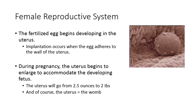To summarize what you need to know for the urogenital system: know all the different organs, know the pathway of the male reproductive system, know the pathway of the female reproductive system, and know the pathway of the excretory system. Extra details like the uterus going from 2.5 ounces to 2 pounds during pregnancy are not required for the exam — just something interesting to know.